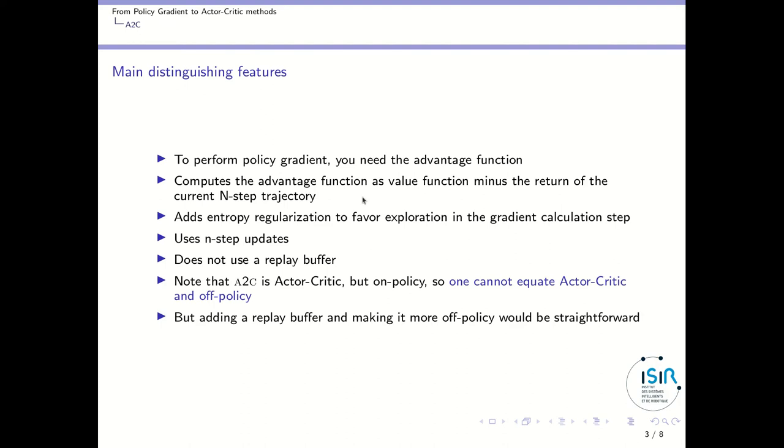Let's see the main distinguishing features of this algorithm. To perform policy gradient, you need an advantage function. The way A2C computes the advantage function is as follows: it uses a value function, not an action value function, so a V function and not a Q(s,a) function. It uses this value function minus the return of the current trajectory, taking just the N next steps. It also adds entropy regularization to favor exploration, which was very early in this domain. Using entropy regularization has become much more common in reinforcement learning, but this was one of the earliest to do so.